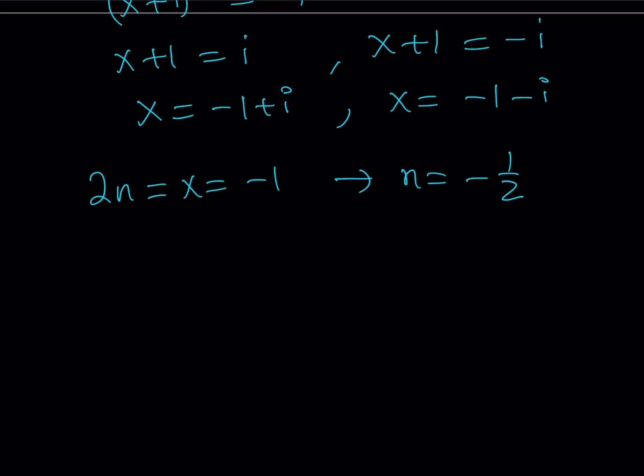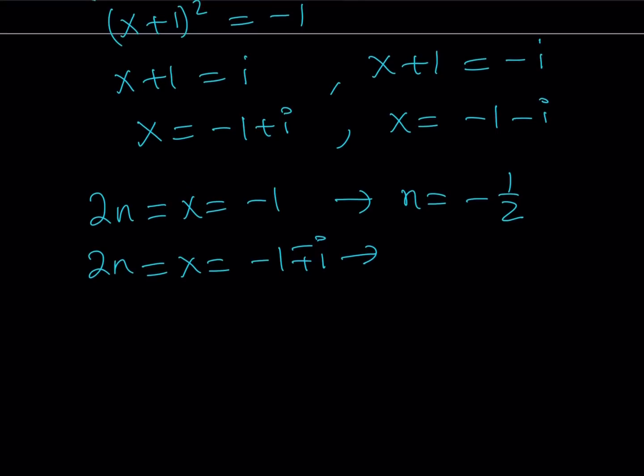If 2n = x and x = -1, then n = -1/2. And if 2n = x = -1 ± i, then n = (-1 ± i)/2. So we get three solutions using our first method.